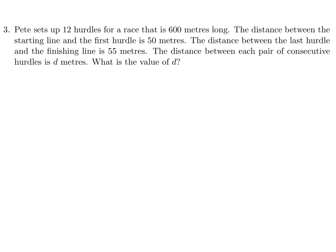Pete sets up 12 hurdles for a race that is 600 meters long. The distance between the starting line and the first hurdle is 50 meters. The distance between the last hurdle and the finishing line is 55 meters. The distance between each pair of consecutive hurdles is d. What is the value of d? Let's set this up carefully.